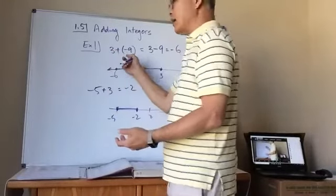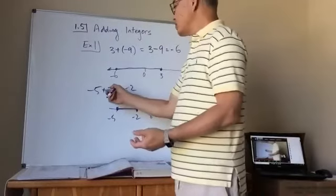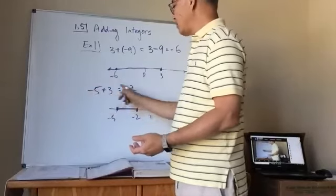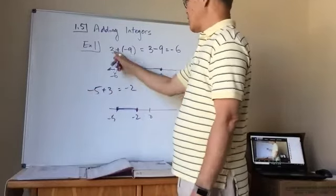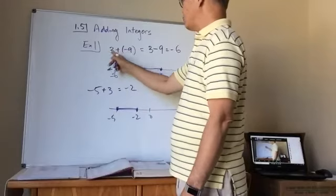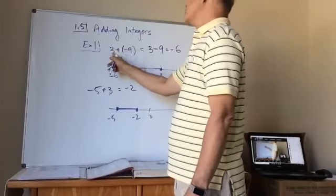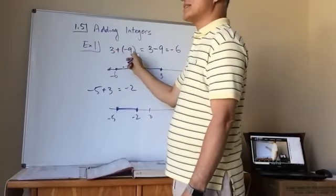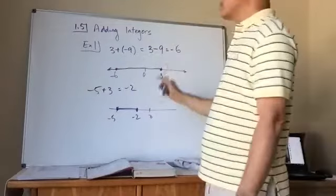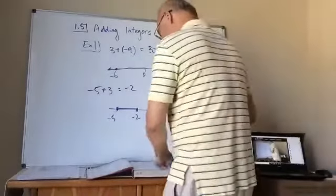When you have a positive and a negative, you subtract the numbers. I have 3 and 9 — subtracting gives 6 — but since I have more of a negative, the answer becomes negative 6.